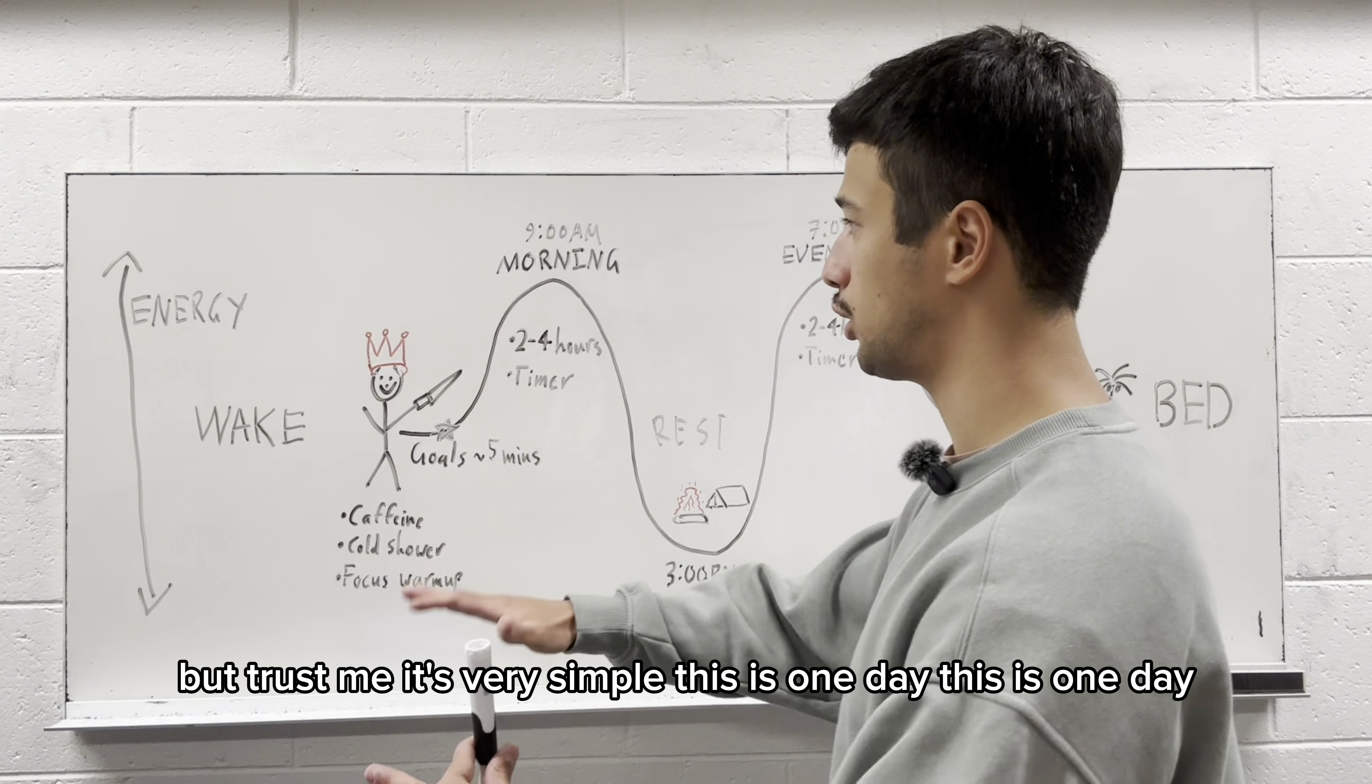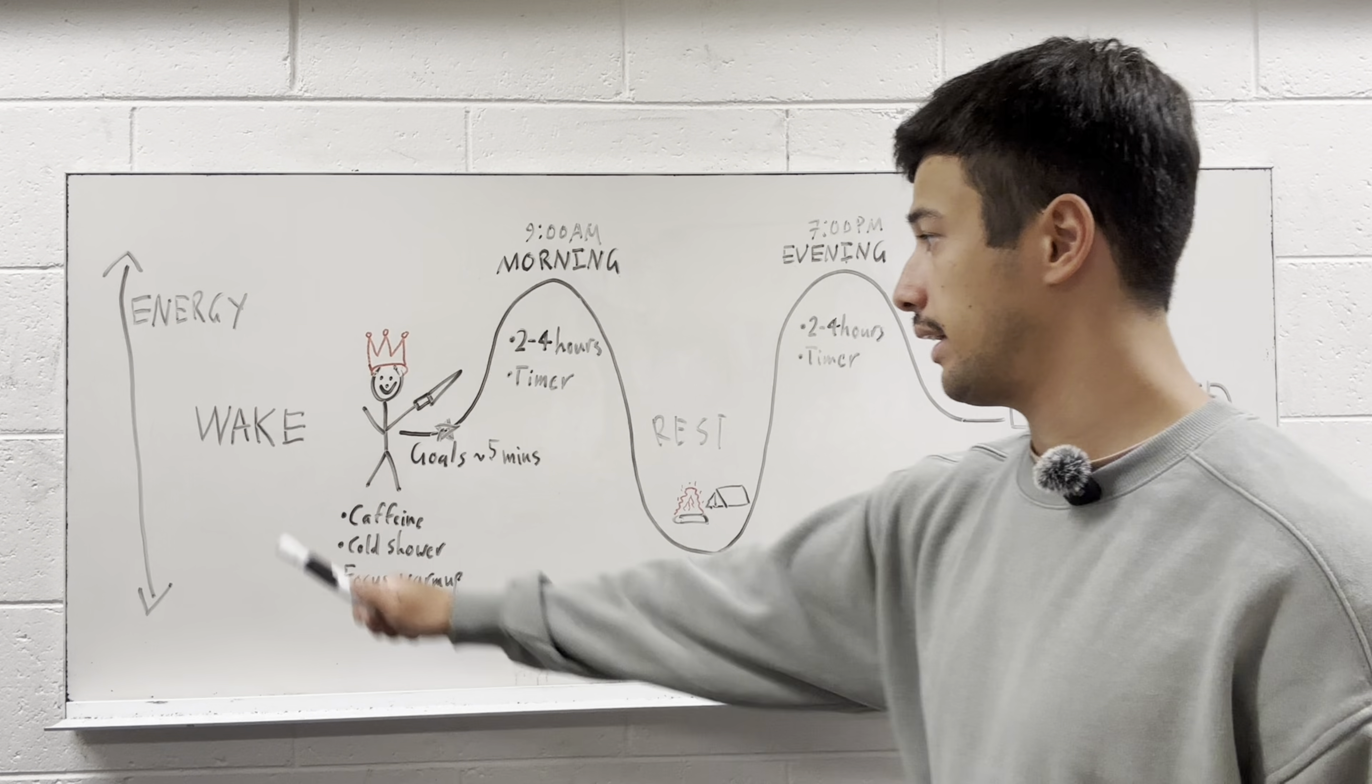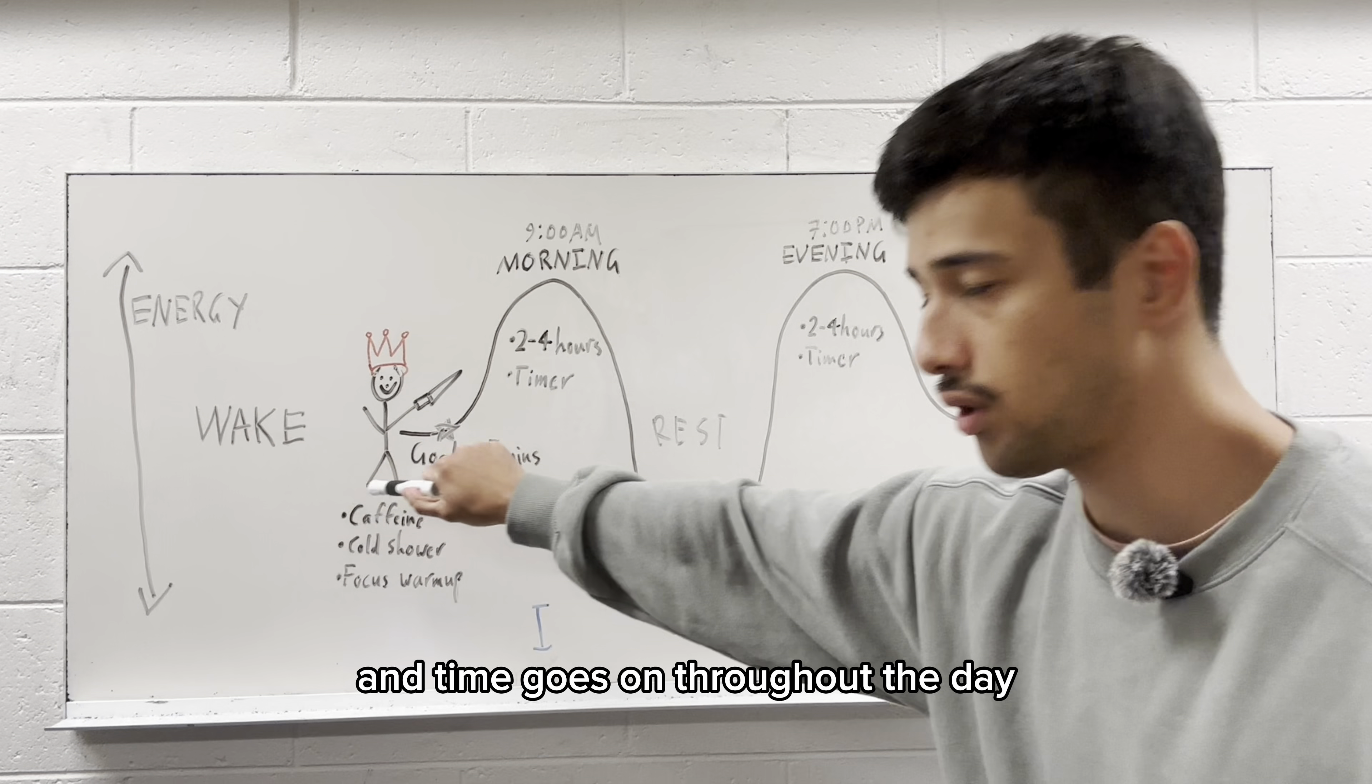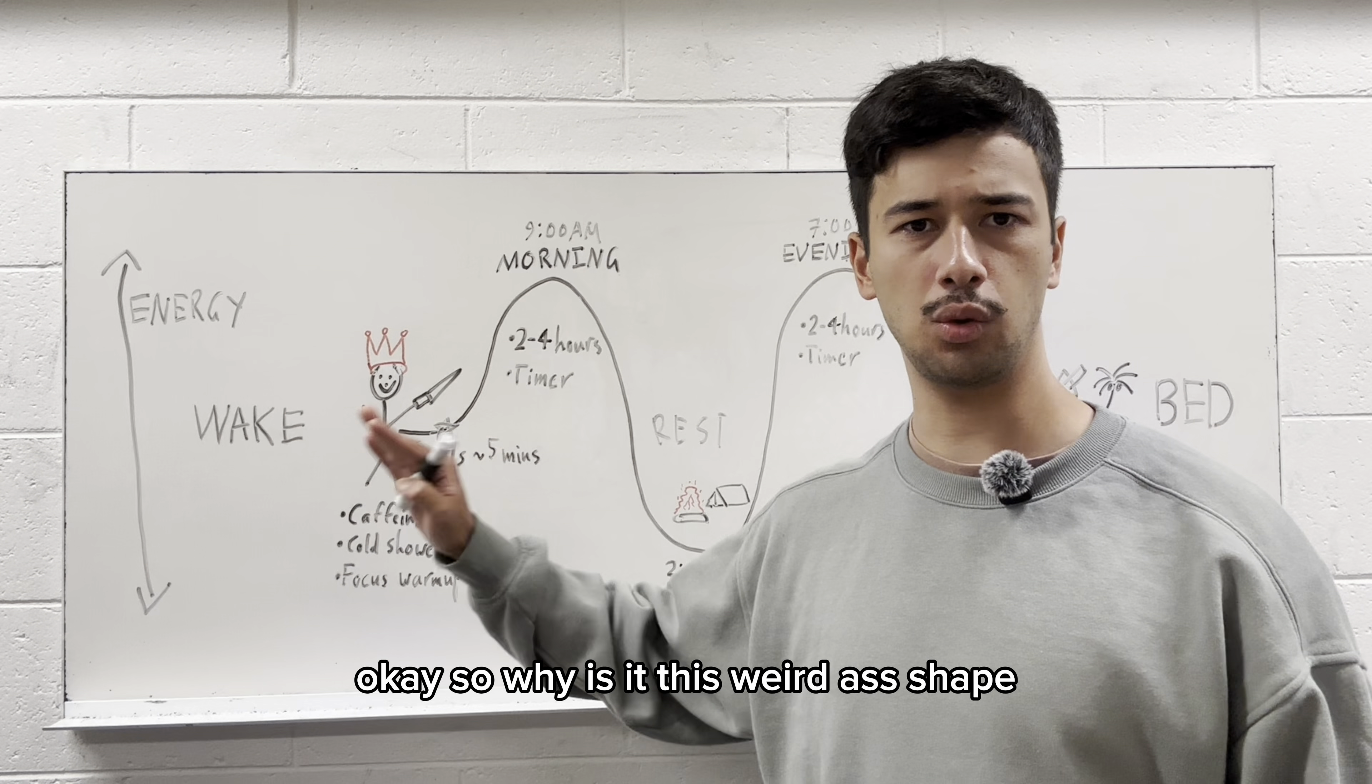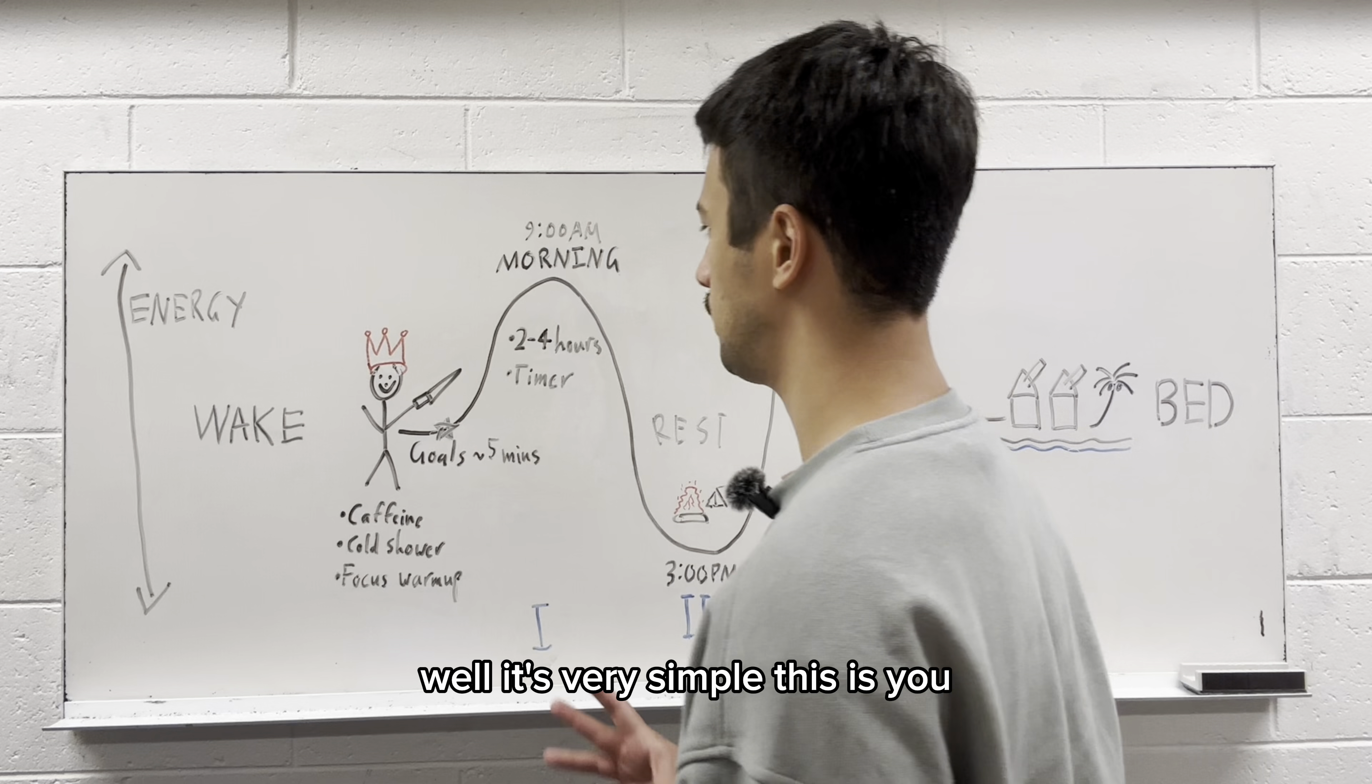I know it looks complicated, but trust me, it's very simple. This is one day. Here's where you wake up on the left and time goes on throughout the day. And here's where you go to bed at nighttime on the right. Okay. So why is it this weird shape? Why is it like up and down? Well, it's very simple.